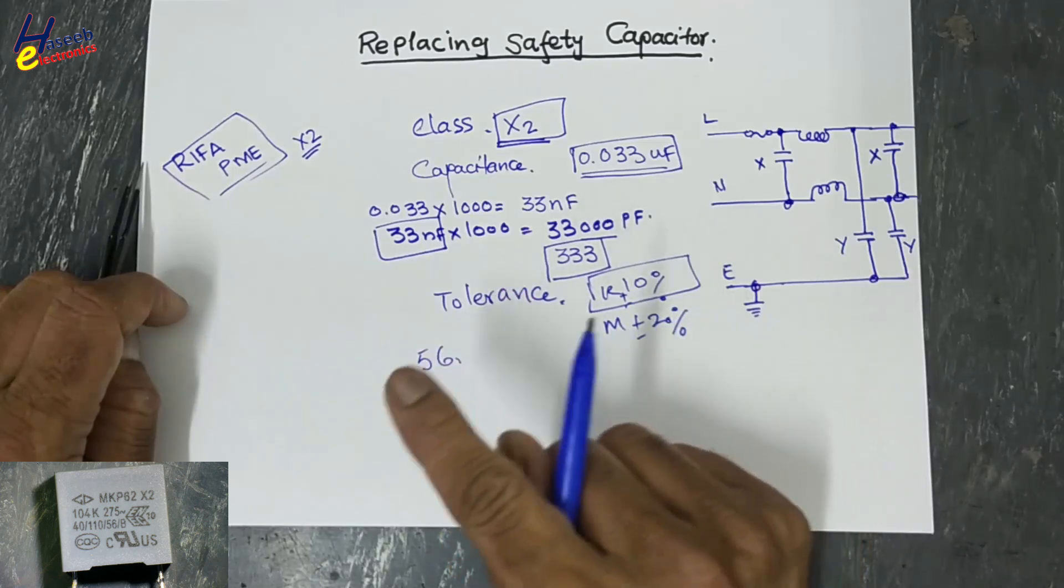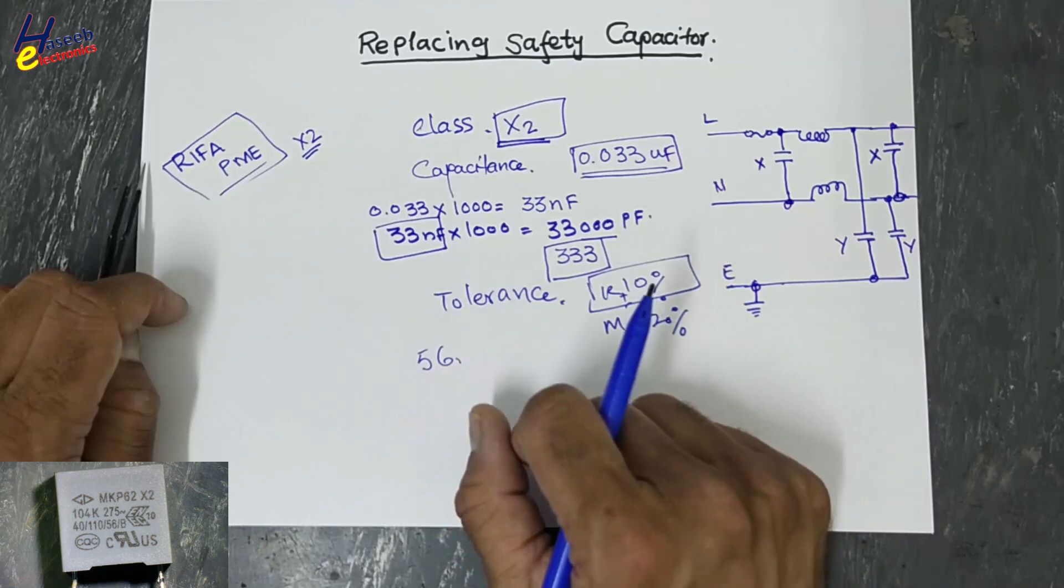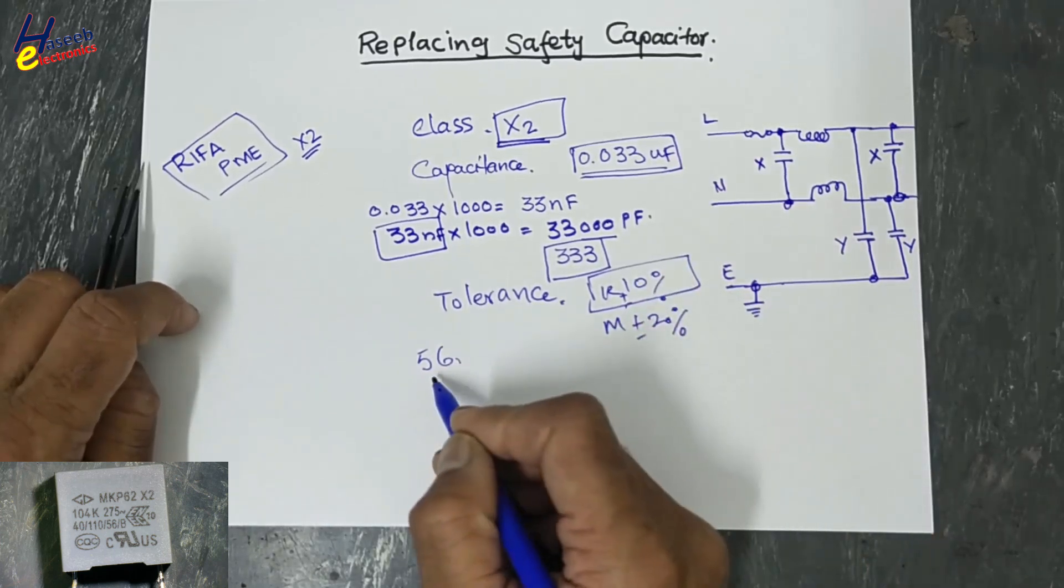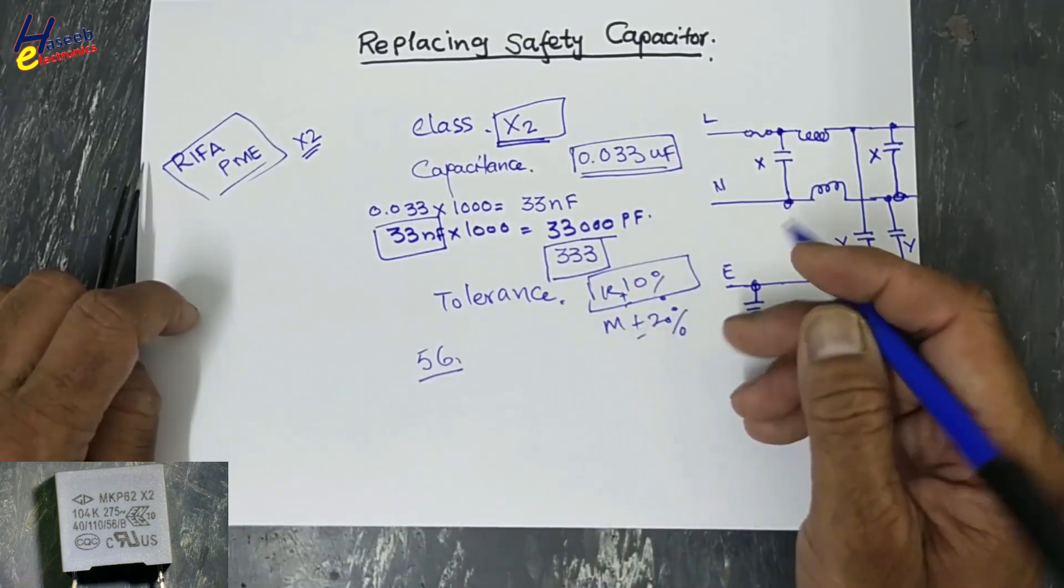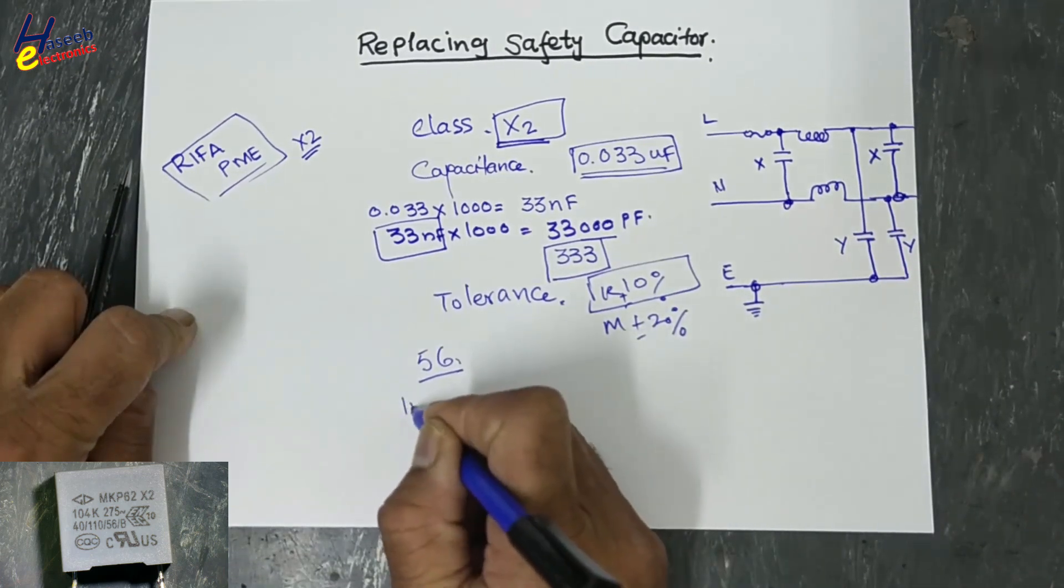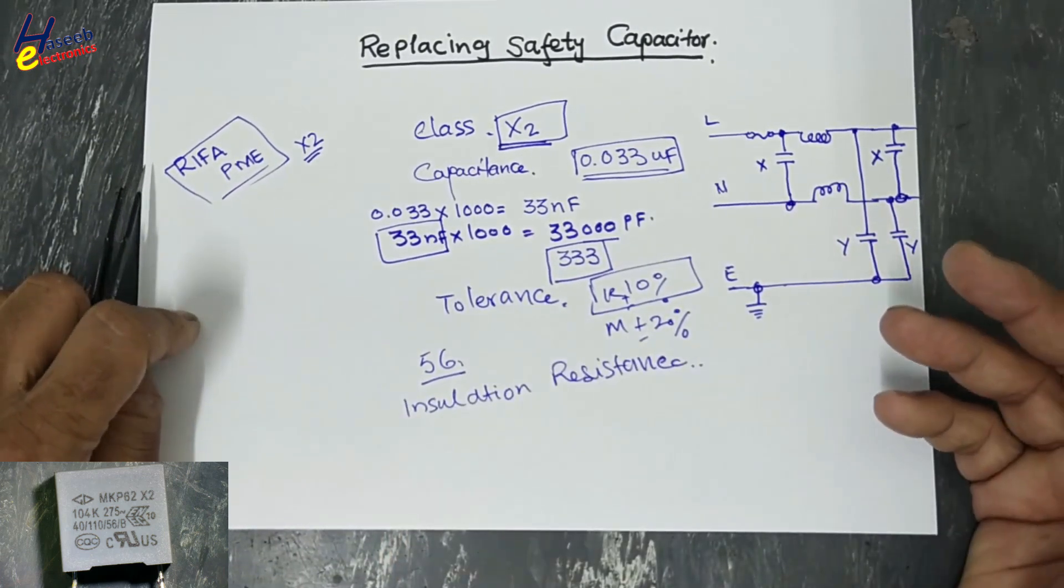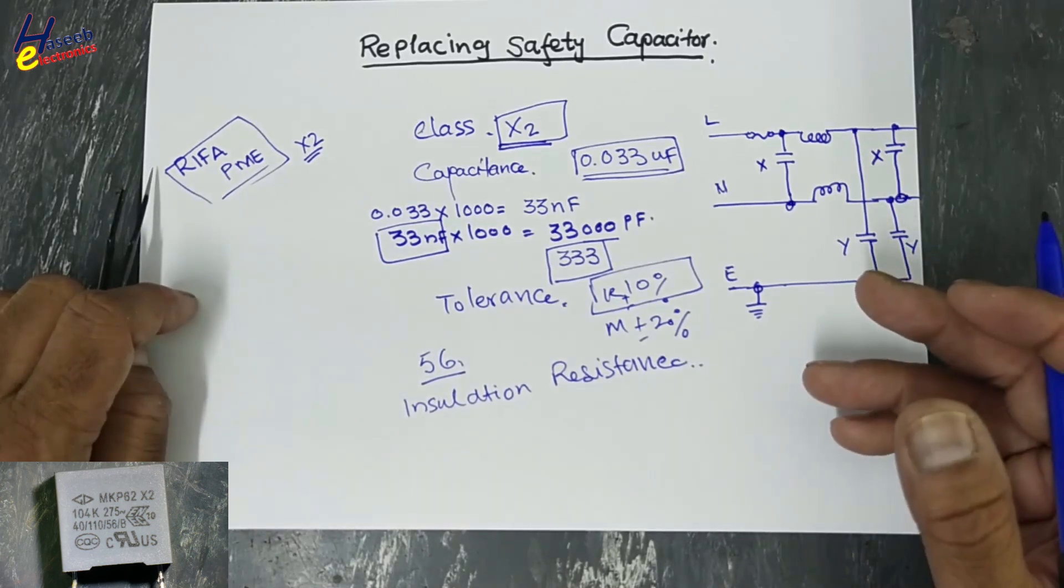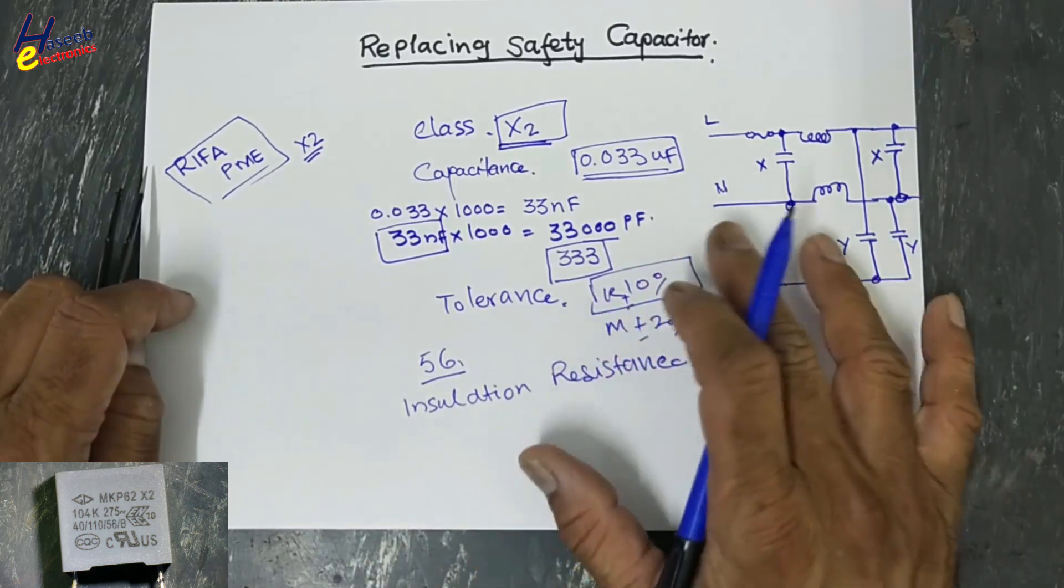So it is number of days. Then B is test category and its safety grade. The next is insulation resistance. Normally 15,000 mega ohms, 12,000 mega ohms. We will check datasheet.